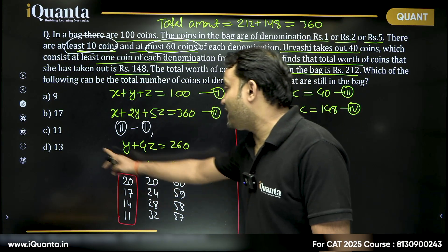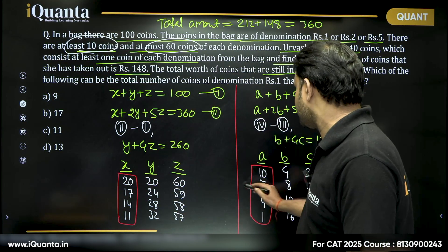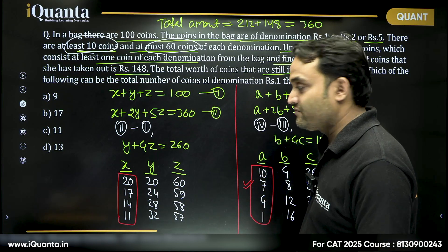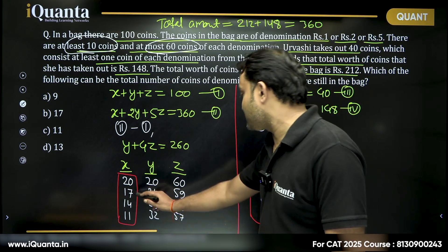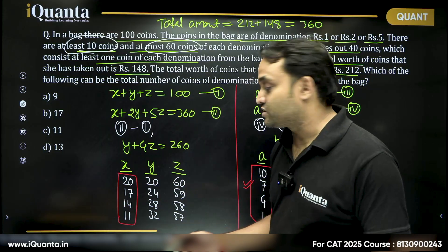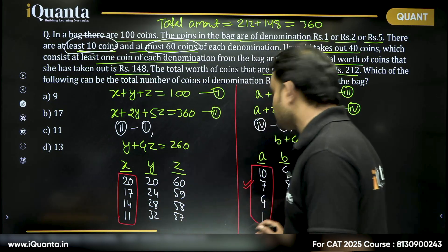13. 20 minus 13 is 7. Is there a 7? Yes, this is possible. Then there are multiple cases possible like 17 minus 4 is also 13. 14 minus 1 is also 13.